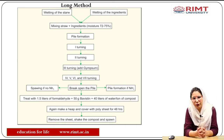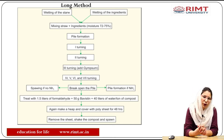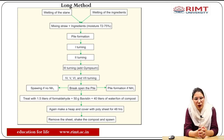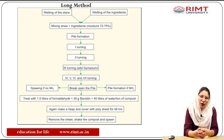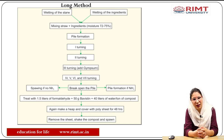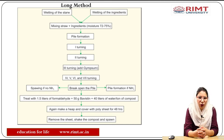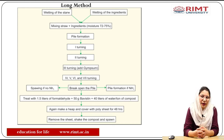The first step in the long method is wetting of the straw — wheat straw or rice straw — and wetting of the other ingredients like bran, MOP, urea, and calcium ammonium nitrate. After wetting, the mixing procedure takes place. During mixing, the mixture must have a moisture content of 72 to 75 percent. The different component mixtures are then piled up to form a stack. With the passage of time, turning is done — there are a total of eight turnings — and with each turning the piles are turned and restacked.